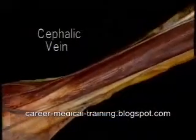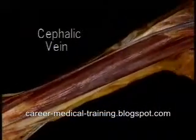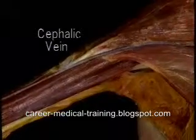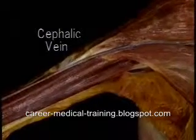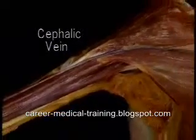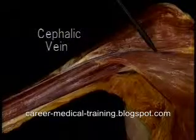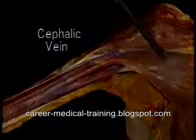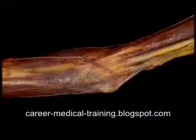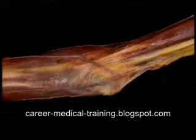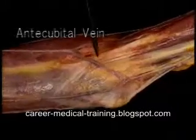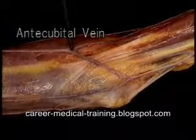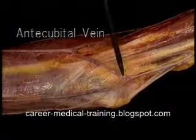The cephalic vein stays at a superficial level as it runs up the arm over the biceps. At the top of the arm, it lies between the deltoid and pectoralis major. The large vein crossing the front of the elbow is the antecubital vein. It crosses from the cephalic to the basilic vein.